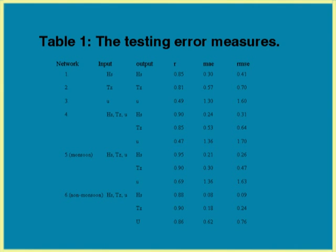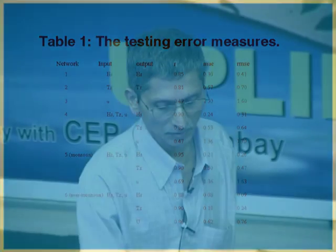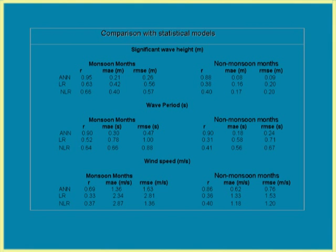This shows how closely the output of wave height, wave period, and wind speed during the non-monsoon season resembles the actual observed values in terms of correlation coefficient, mean absolute error, and root mean square error. It also shows the time series comparison and corresponding scatter plots, comparing observed significant wave height, observed wave period, and observed wind speed with the network-derived values.